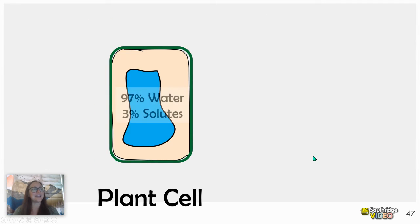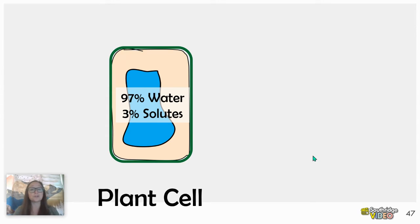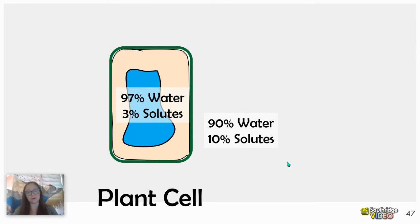Let's see what happens if we look at water concentrations and solute concentrations on both sides of the cell. When we talk about osmosis and the direction water is going to flow, we talk about the concentration of water but also the concentration of solutes. Solutes are basically anything that's not water — could be salts, sugars, ions, anything. Let's say the inside of the plant cell is 97% water and 3% solutes, while on the outside it's 90% water and 10% solutes.